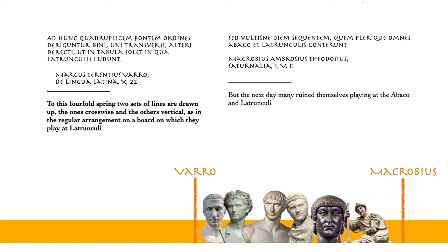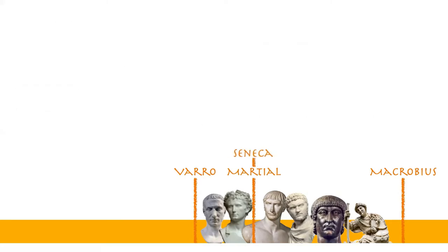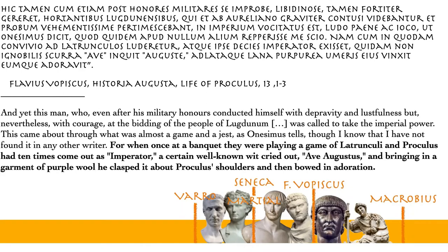The first mention dates back to the first century before Christ and is included in the treaty De Lingua Latina by Varro. In a chapter explaining how to draw a chart for the study of Latin declination, we can read that lines are drawn up crosswise and vertical, as in the regular arrangement on a board on which they play at Latrunculi. The last mention is contained in the Saturnalia of Macrobius, which dates to the early fifth century. In between, there are several other mentions by Latin authors like Martial, Seneca, and also minor authors like Flavius Vopiscus, who tells the story about a character named Proculus who took this game a little bit too seriously.